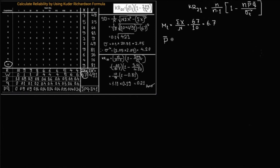Next, calculate p bar. P bar equals mt divided by small n. Small n represents the number of items. So mt is 6.7 and small n is 10. So we get 0.67.